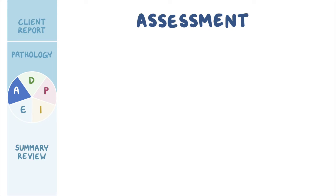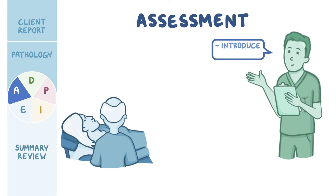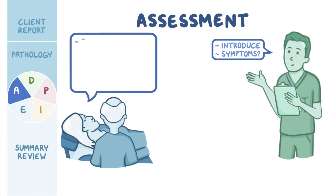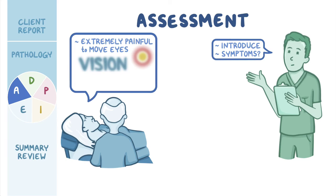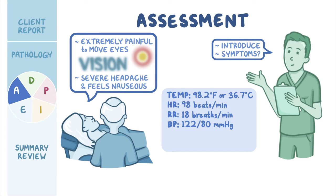Let's go back and assess Mrs. Yao, who is lying down in her room with her husband sitting beside her. You introduce yourself and ask Mrs. Yao about her symptoms. She states that it is extremely painful to move her eyes and that she is seeing strange red halos around the lights, but everything else is blurry. She also tells you that she has a severe headache and feels nauseous. Her vital signs are oral temperature 98.2°F or 36.7°C, heart rate 98 beats per minute, respiratory rate 18 breaths per minute, blood pressure 122/80 mmHg, SpO2 98% on room air, and pain 9 out of 10 located in her eyes and head.